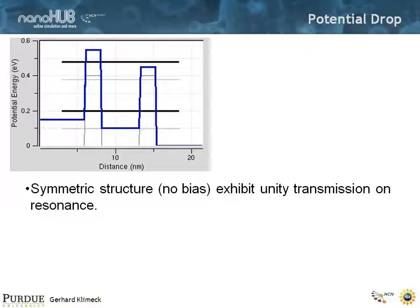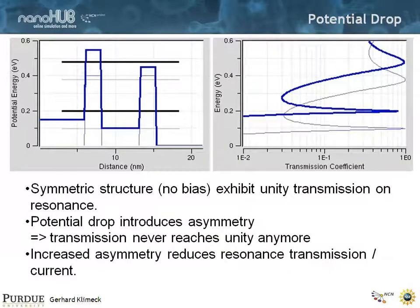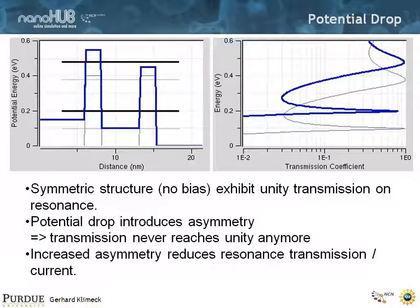The dashed line is here — up, down, up, down — that gives you a transmission coefficient that can reach one for one particular energy. But if you have a bias, like in a stick diagram like this, your transmission can never reach one. You build asymmetry into the structure, and all of this you can play with in the PCPBT tool. So the increased asymmetry reduces the resonance transmission and ultimately the current.